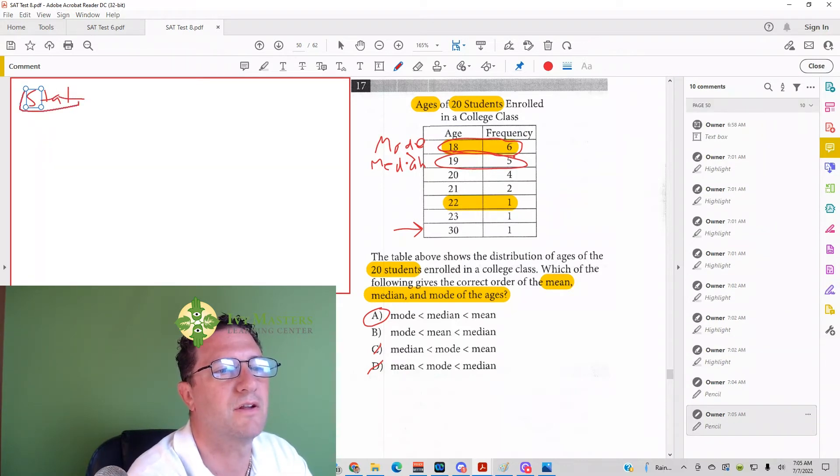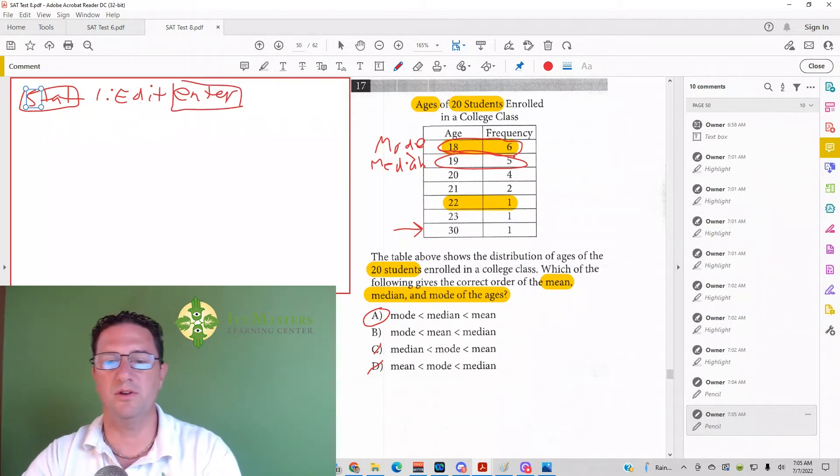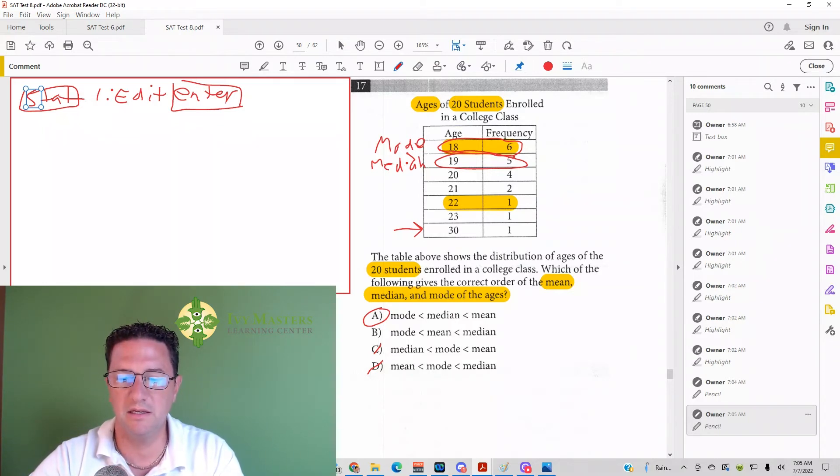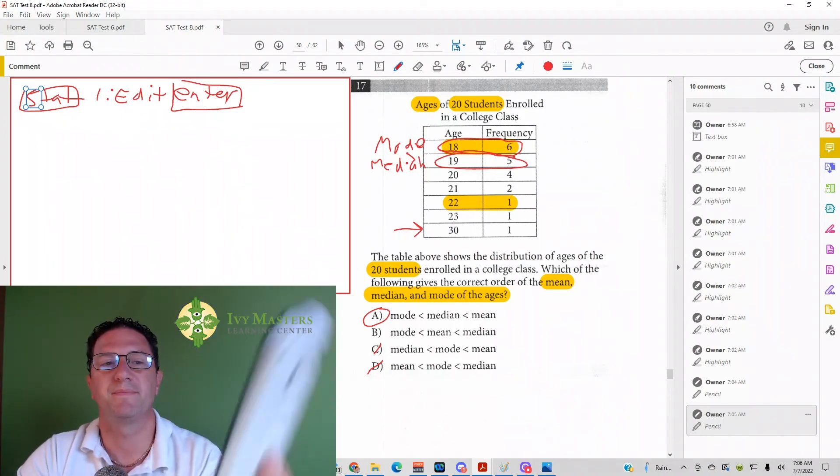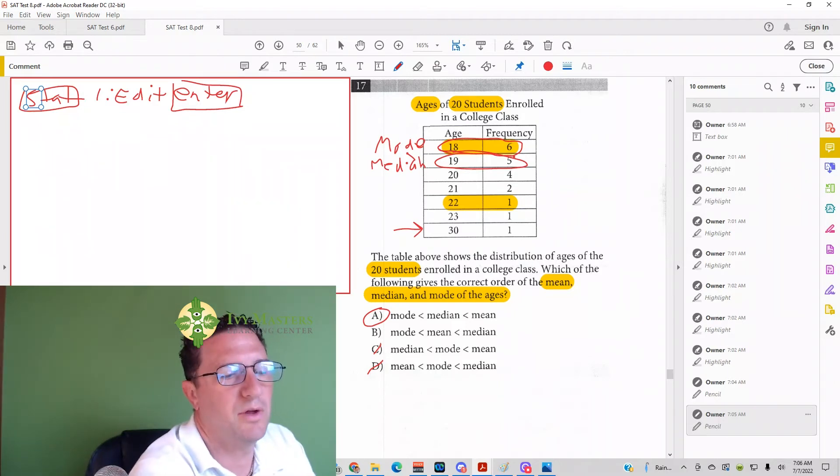And what you would do is you'd hit on your calculator. I'm going to write the steps down here. You'd hit stat. There's a stat button there. And then you would, you'll see number one, it'll say edit. And you just hit enter to choose that number one edit. And then all I'm going to do is under L1, I'm going to populate my ages. So I put 18, 19, 20, 21, 22, 23, 30. And then under L2, I put what corresponds. So what corresponds with the 18? 6. So my 6 should be right next to the 18, and then a 5, and then a 4, and then a 2, and then a 1, and then a 1, and then a 1.